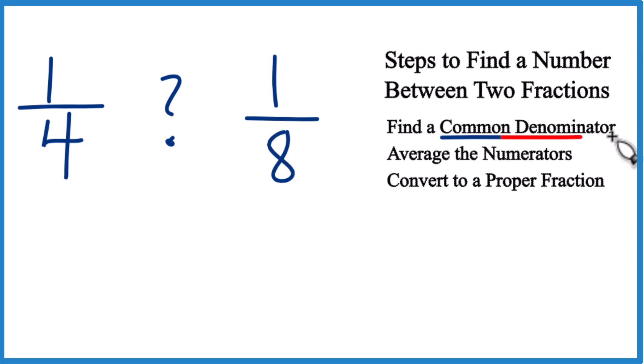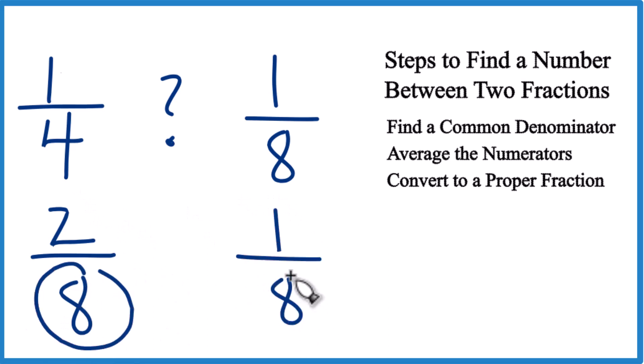First step, find a common denominator. We have 1/4 and 1/8. If we multiply the numerator and denominator by 2, 1 times 2 is 2, 2 times 4 is 8, we'd have 2/8. And we already have 1/8 here. So we have that common denominator now.